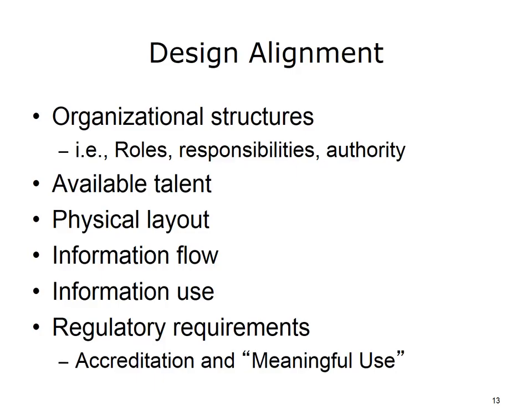Information flow can be assessed by physically walking through information paths to see if the needed information is available and if the representation by the information systems adequately supports the task. Information use can be assessed by examining each task to see if the needed information is available and if the representation by the information systems adequately supports the task. Regulatory requirements, such as meaningful use and accreditation, have required reporting which may vary by specialty area and by state. Regulatory requirements can be assessed by asking clinic leadership what regulations apply and by a gap analysis between the requirements and the proposed process.